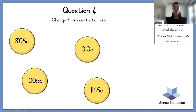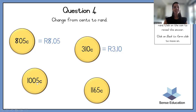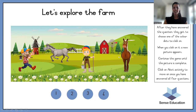We're going to change again from cents to rand. This time, you pretend the comma is at the back and move it two places to the left. So: 805 cents is 8 rand 5 cents; 310 cents is 3 rand and 10 cents; 1,005 cents is 10 rand 5 cents; 1,165 cents is 11 rand 65. Well done, excellent! And the last picture is another horse.